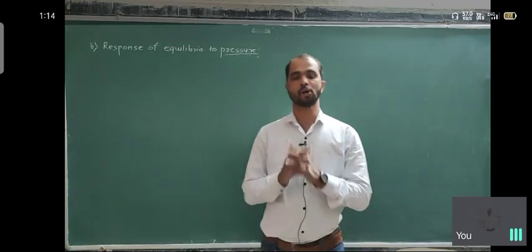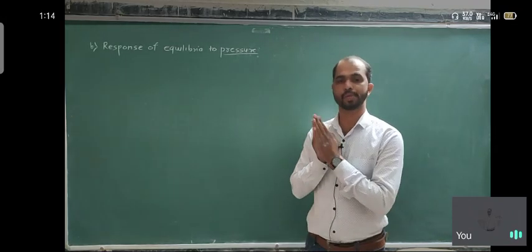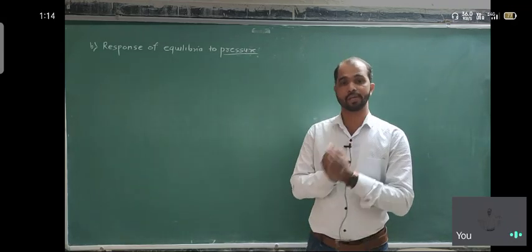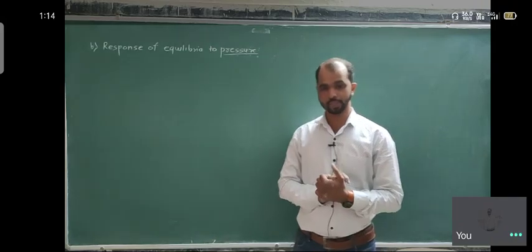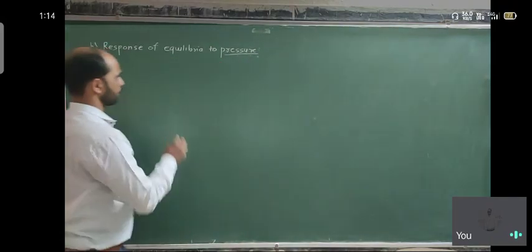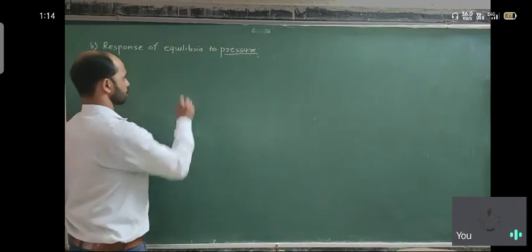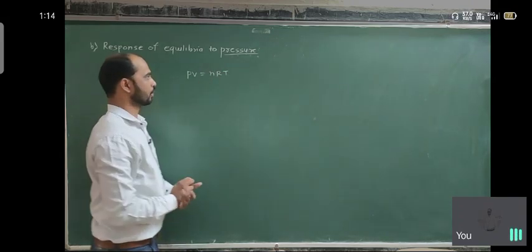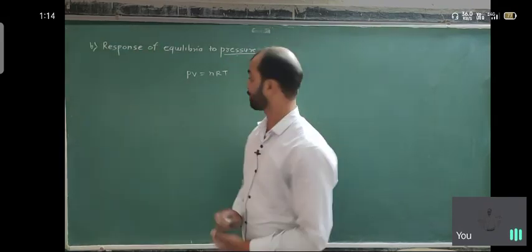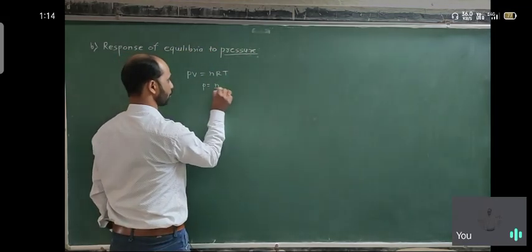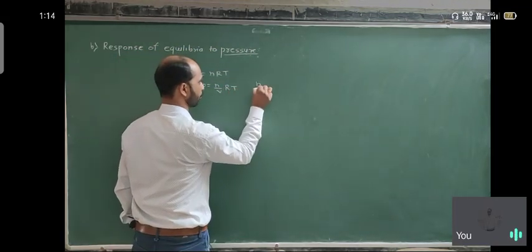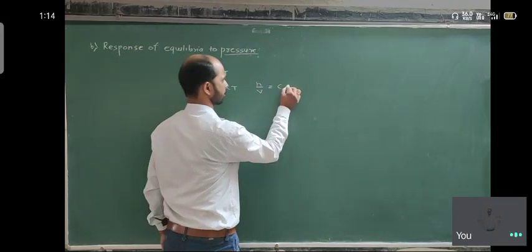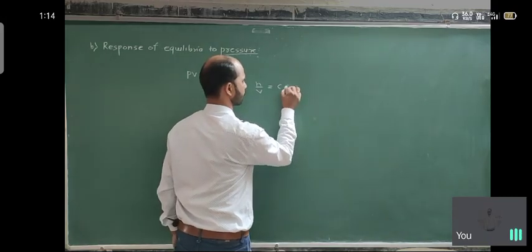So basically, the number of moles of gaseous reactants and the number of moles of gaseous products are very important. For gaseous conditions, we consider the ideal gas equation PV = nRT. From this, P = (n/V)RT. Here, n/V — the number of moles upon volume — is directly considered as C, the concentration.